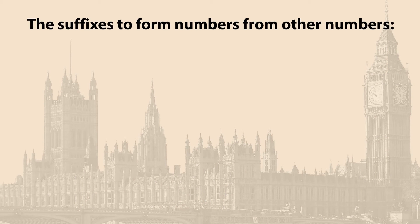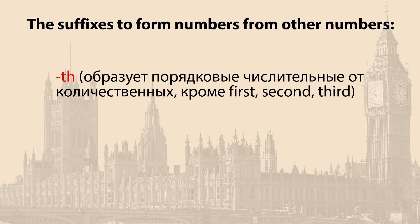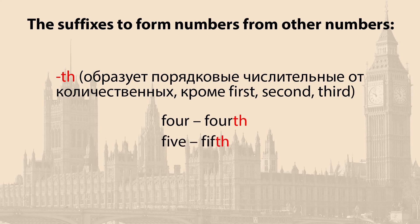So let's go through them together. The suffix TH forms ordinal numbers from cardinal numbers, except for first, second, and third. For example: four → fourth, five → fifth, six → sixth, and so on.